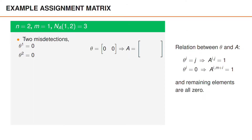Consider an example with two objects and one measurement, giving three valid data associations. The first data association is that we have two misdetections: theta_1 is equal to 0 and theta_2 is equal to 0. It then follows that the element on row 1, column 2 is equal to 1, and the element on row 2, column 3 is equal to 1, and all remaining elements are 0.